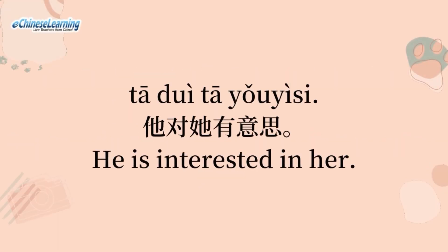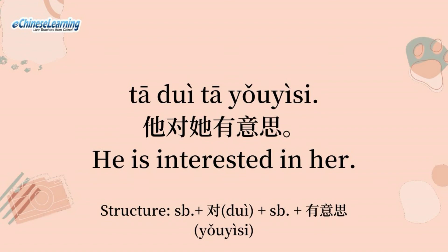有意思 can also mean that there are feelings between men and women, but 有趣 cannot. For example: he is interested in her.